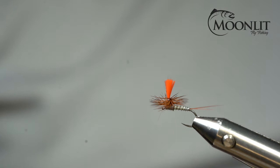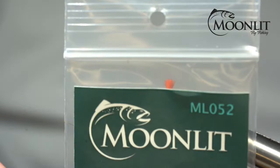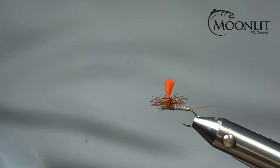Hi, this is Brandon Moon with Moonlit Fly Fishing. I want to welcome you to fly tying night tonight. Tonight we're going to tie up a classic parachute Adams pattern. I'm going to make it a little bit different than the traditional recipe but it's something I've had a lot of success with and it makes it just a little bit easier in my opinion to tie. For the hook we're going to be using the ML052.